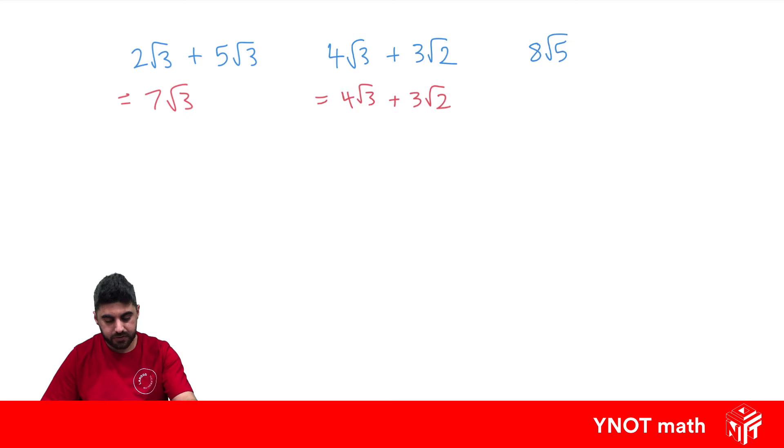8 root 5 minus 3 root 5. Well, they're like surds because they're both root 5s. We can just do 8 minus 3 which is 5 root 5.